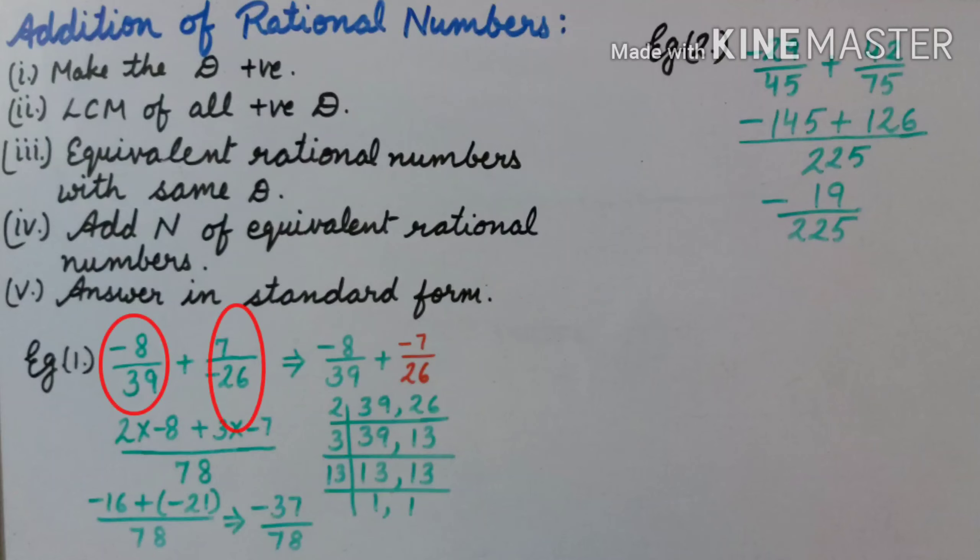For example, we should find the sum of minus 8 upon 39 and 7 upon minus 26. So make minus 26 denominator positive. It is minus 7 upon 26. LCM of 39 and 26 is 78.